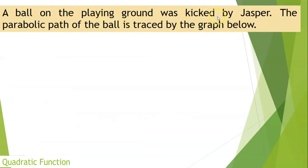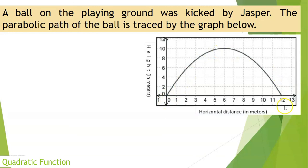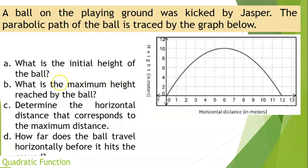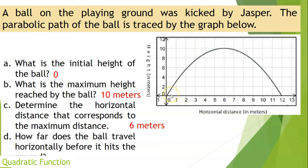A ball on the playing ground was kicked by Jasper. The parabolic path is traced by the graph, where the horizontal axis is distance in meters and the vertical axis is height in meters. The initial height of the ball is 0 (it started on the ground). The maximum height reached by the ball is 10 meters. The horizontal distance corresponding to the maximum height is 6 meters from the starting point. The ball travels 12 meters horizontally before it hits the ground.